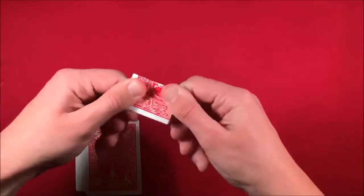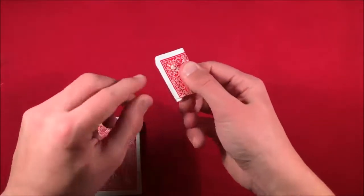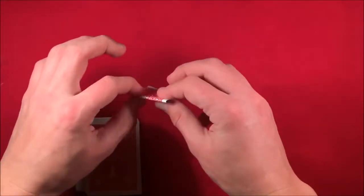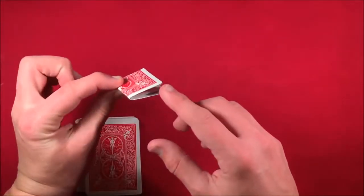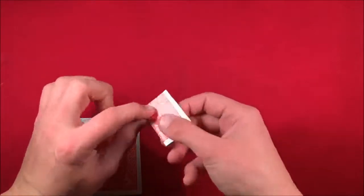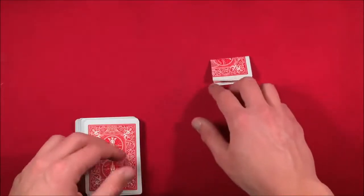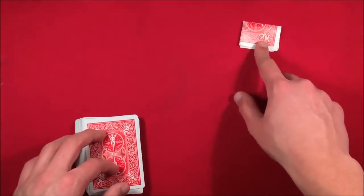So you fold it up and you have the spectator bite the card where these flaps are. You don't have them bite where the crease is because if they bite here then these little flaps can open up and you might flash the card. So make sure that they're biting the card right around here with the flaps.